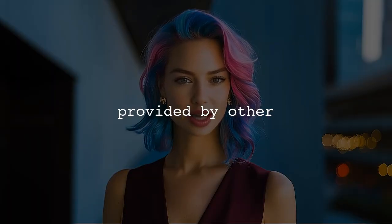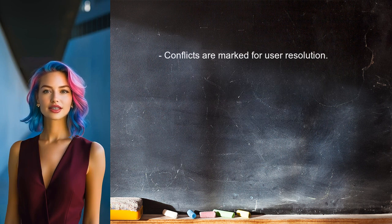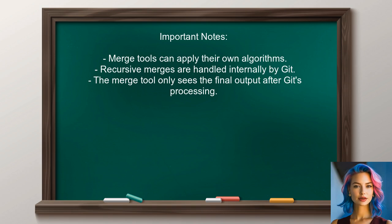Let's look at the answers provided by other users. One user provides a detailed explanation of how the Git merge process works, emphasizing that the merge tool is invoked only after Git has completed its merge attempt. They clarify that the first step is to choose a merge strategy, typically the recursive strategy, and identify merge bases. If conflicts arise, Git will mark them in the output. The merge tool operates on the results of this process, allowing for further resolution of conflicts. They also highlight that the merge tool does not alter Git's conflict format, and that it can apply its own merge algorithm. When Git performs a recursive merge, it handles inner conflicts differently, ensuring that the merge tool only sees the final output after all merging is done.